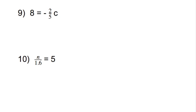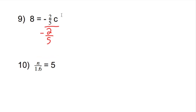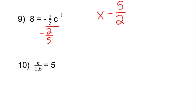Now the final two. Number 9: 8 equals negative 2-fifths c. What's happening on the side with the c? We have negative 2-fifths in front of it — if you said multiplication, you are correct. So the opposite of multiplying by negative 2-fifths is dividing by negative 2-fifths. And just like in the change-and-flip method, dividing by negative 2-fifths is the same as multiplying by negative 5 over 2.